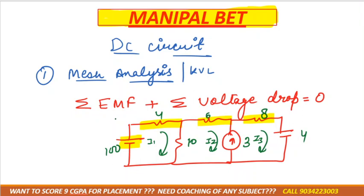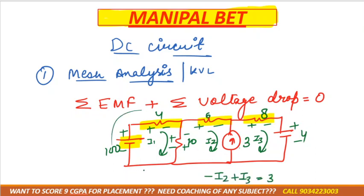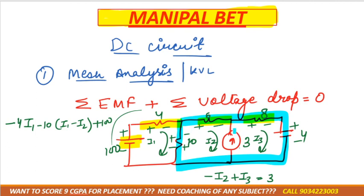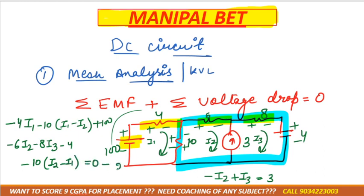Voltage drop is across the resistance and EMF is across the battery. Mark the current direction, then mark the sign convention, and form the mesh equations one by one. If there is a current source, make the current source equation: minus I2 plus I3 equals 3. The second mesh equation: minus 4I1 minus 10(I1 minus I2) plus 100. We take a supermesh because we can't go through the path where a current source is present. The third mesh equation: minus 6I2 minus 8I3 minus 4 minus 10(I2 minus I1) equals zero.